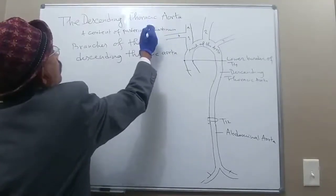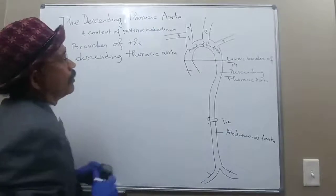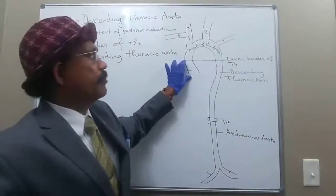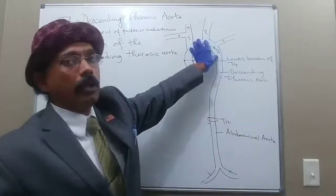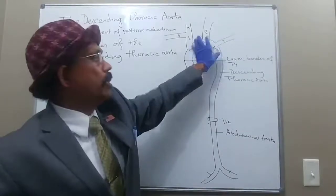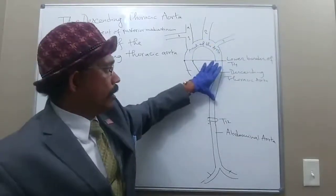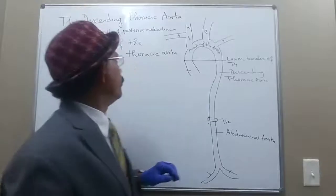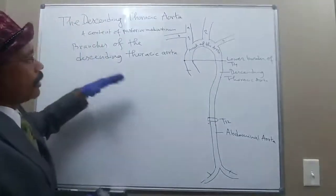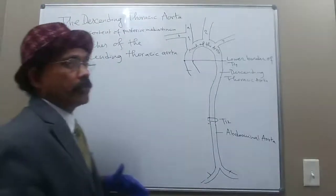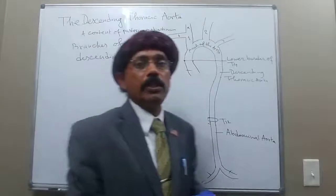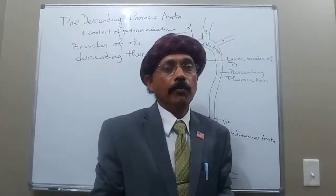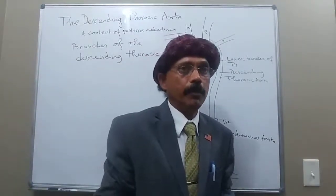The ascending aorta is a content of the middle mediastinum. The arch of the aorta is a content of the superior mediastinum. The descending thoracic aorta is a content of the posterior mediastinum. Multiple structures in the posterior mediastinum should get their blood supply from the descending thoracic aorta.